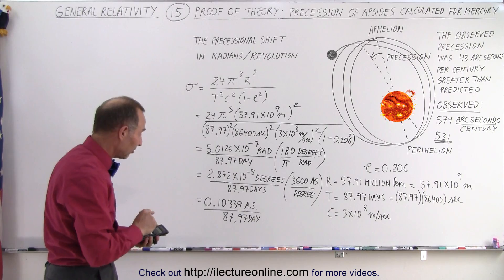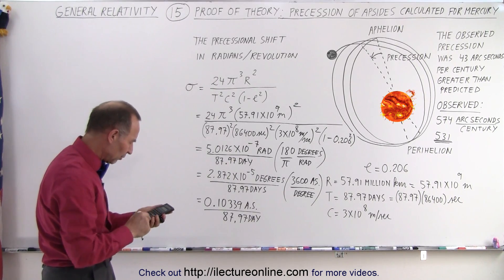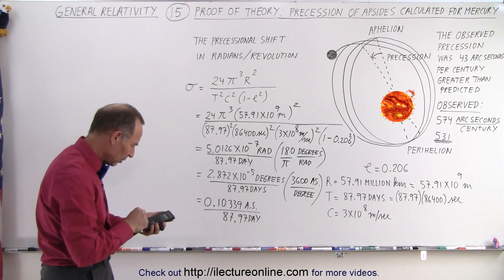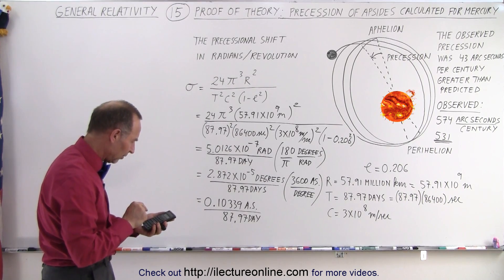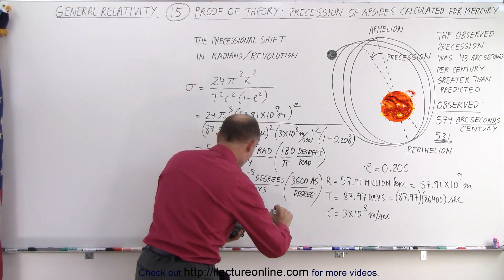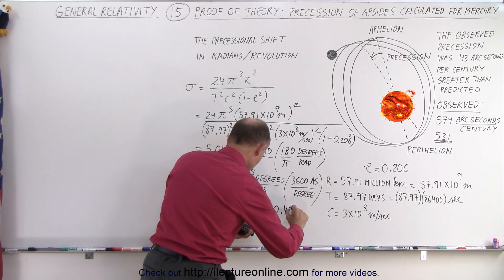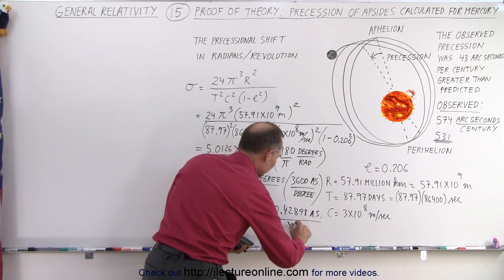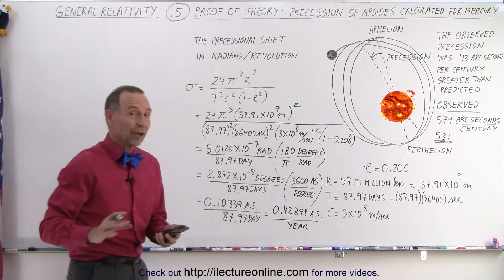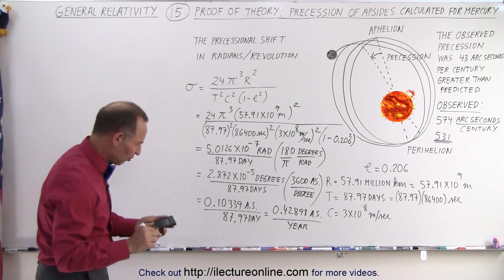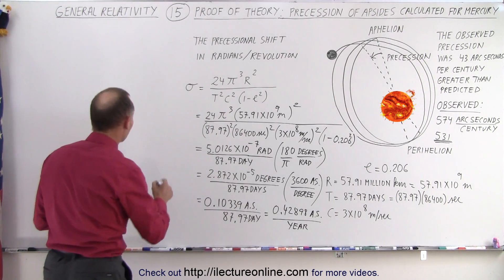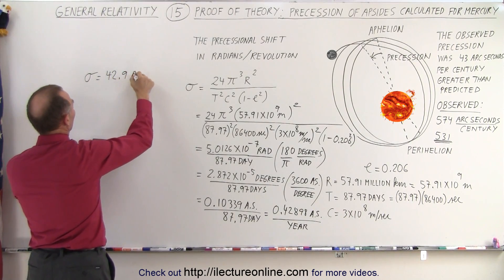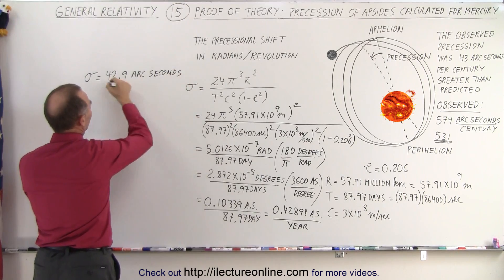So now let's convert that to the number of arcseconds per year. So now what we need to do is we need to multiply that times 365 and divide by 87.97, so now we have, this is equal to 0.42898 arcseconds per year. And now, of course, we have to multiply that times 100 to convert it to arcseconds per century. So times 100. And guess what? So this is equal to 42.9 arcseconds per century.